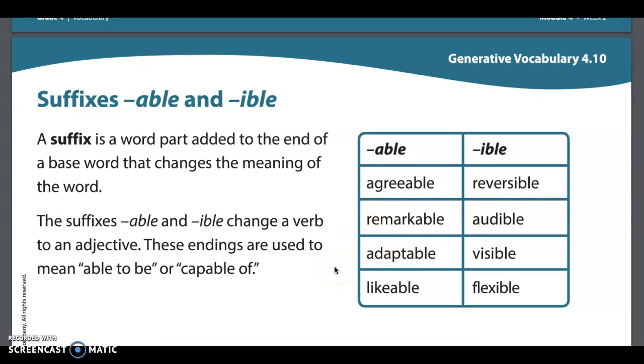Adaptable, the base word would be adapt, and then it changes to adaptable. Like is the verb that's the base word in likable. And then over here we have reversible. So the base word for that would be reverse, which is to go backwards. And reversible is able to go backwards or able to undo something.